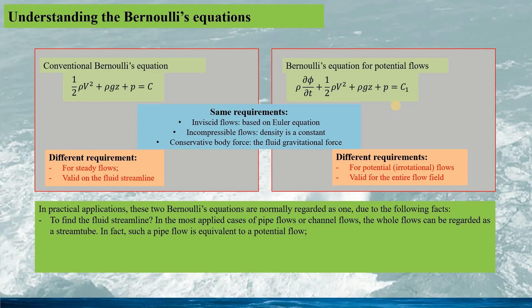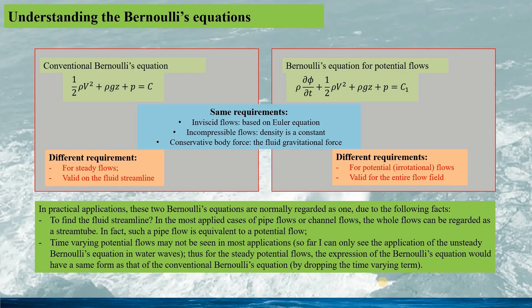In practical applications, these two Bernoulli's equations are normally regarded as one, due to the following facts. To find the fluid streamline is difficult. In most applied cases, in pipe flows or channel flows, the whole flow can be regarded as a stream tube. In fact, such a pipe flow or channel flow is equivalent to a potential flow. Time varying potential flow might be only seen in some specific case, such as in water wave, as far as I can see, the only application for the unsteady Bernoulli's equation. Thus for the steady potential flow, the expression of the Bernoulli's equation would have the same form as that of the conventional Bernoulli's equation, simply by dropping the time varying term.